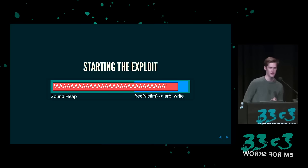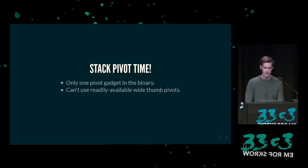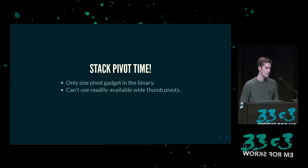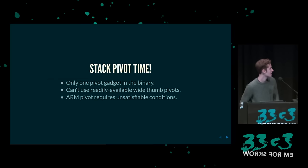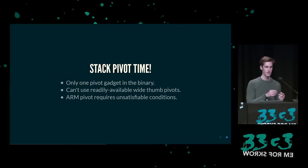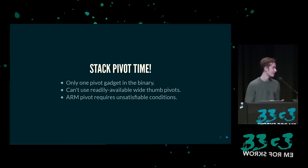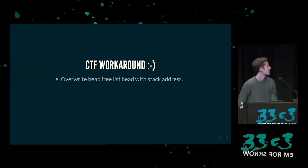An diesem Punkt haben wir eine 4-Bit-Rate und wir wollen da raus. Machen wir also einen Stack-Pivot. Das ist nur einer in der Binary. Ich habe die Thumb-Pivots angesehen, aber die meisten unterstützen nicht die weiten Instruktionen, die wir brauchen. Leider hat einer davon arithmetische Bedingungen — um die Register aufzuladen, müssen die Condition-Flags erfüllt sein. Wenn dieser Pointer nicht null ist, werden die Bedingungen nie erfüllt, weil Sachen nicht gemappt sind und es negative Bereiche gibt. Das ist der CTF-Workaround — das können wir immer noch hinkriegen.